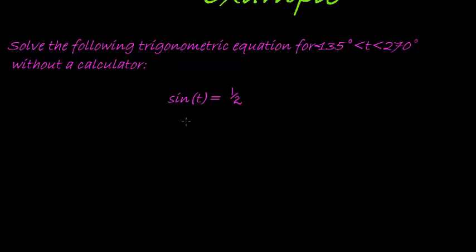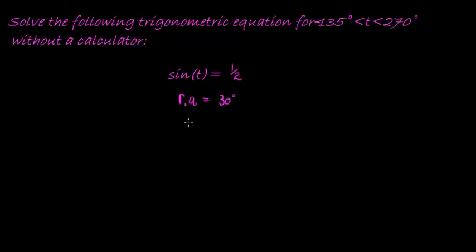So first of all, we need to find our reference angle. Now hopefully by now you know immediately that whenever sine of t is equal to a half, one of the possible inputs here can be 30 degrees. So 30 degrees is the reference angle, it's acute in the first quadrant.